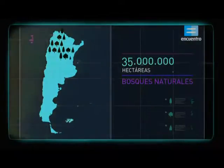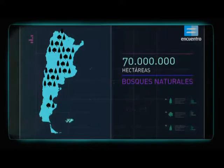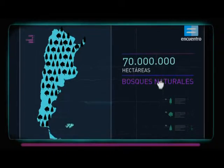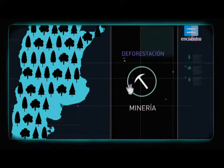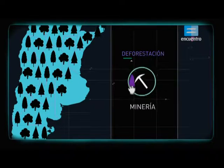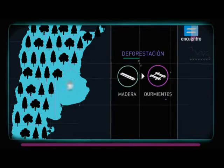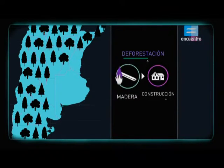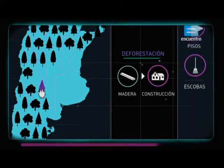En Argentina, unas 35 millones de hectáreas están cubiertas por bosques naturales. Antiguamente estos bosques ocupaban el doble de superficie, pero fueron siendo deforestados para utilizarlos principalmente como recurso maderero. Se utilizaba la leña como fuente de energía, la madera para fabricar durmientes, para la construcción, como postes, muebles, pisos y hasta palos de escoba.